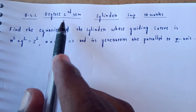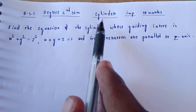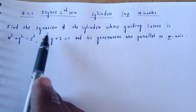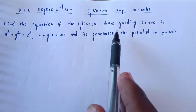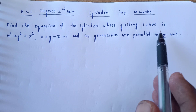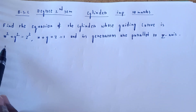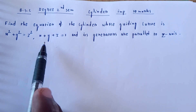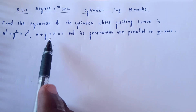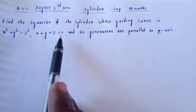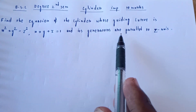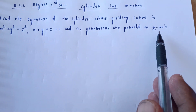Welcome to my channel. BSc degree: find the equation of the cylinder whose guiding curve is x² + y² = z², x + y + z = 1, and its generators are parallel to the z-axis.